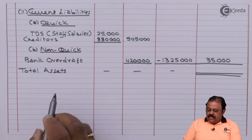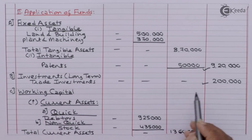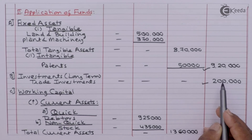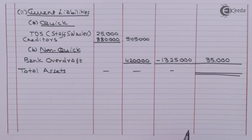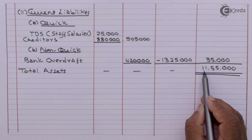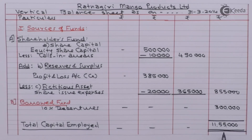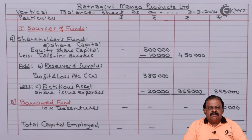Now we calculate total assets. Fixed assets 9 lakhs 20,000 plus investments 2 lakhs, plus working capital 35,000, gives total assets of 11 lakhs 55,000. Total capital employed is also 11 lakhs 55,000 — both parts of the balance sheet are equal, meaning we have correctly prepared the vertical balance sheet.